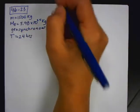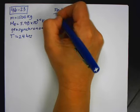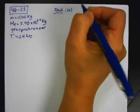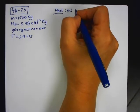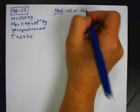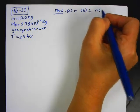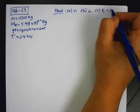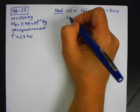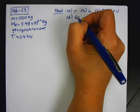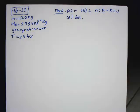So it says find A, the radius of the satellite's orbit, B, the satellite's angular momentum, C, the total energy, and then D, the escape velocity. Okay, so we have a lot of stuff we have to do.